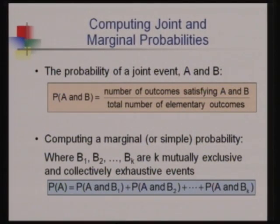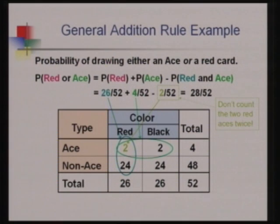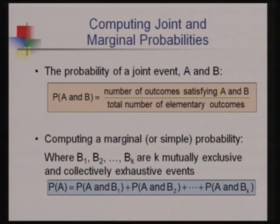There is also joint probability — P(A and B) — which is the probability of both events A and B occurring at the same time. It is calculated as the number of favorable outcomes where both A and B occur, divided by the total number of elementary outcomes. For example, P(red and ace) from 52 cards: there are two cards that are both red and ace, so the probability is 2/52.